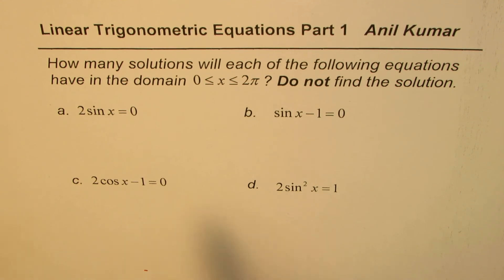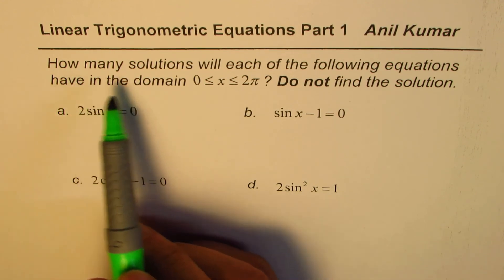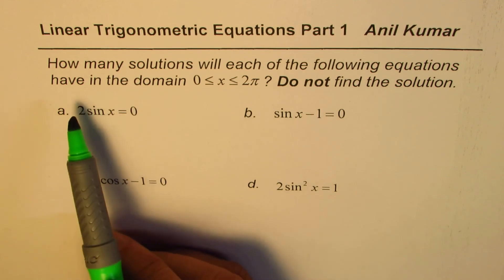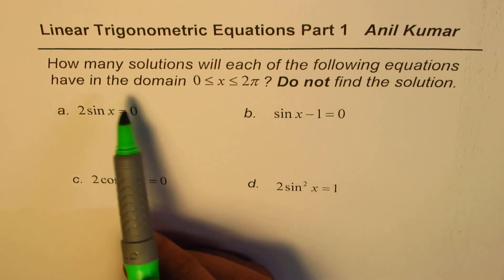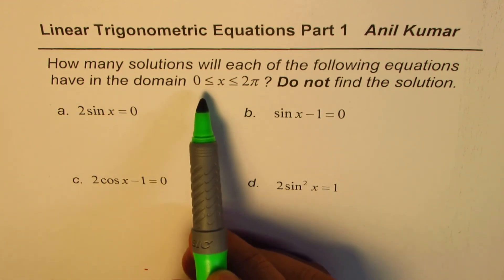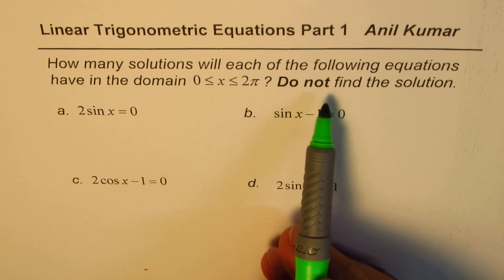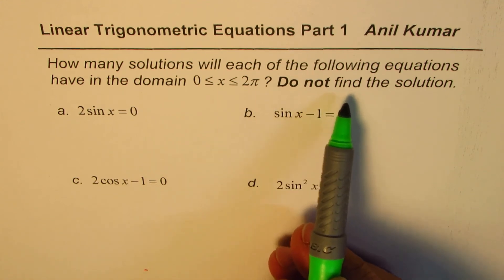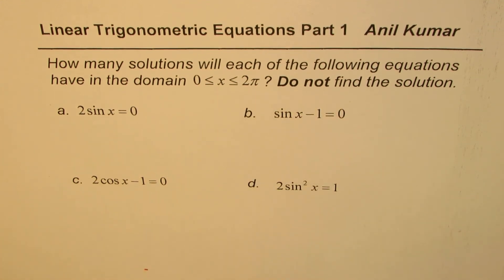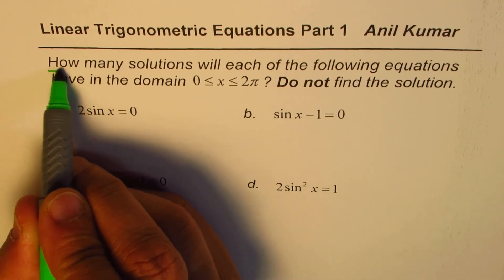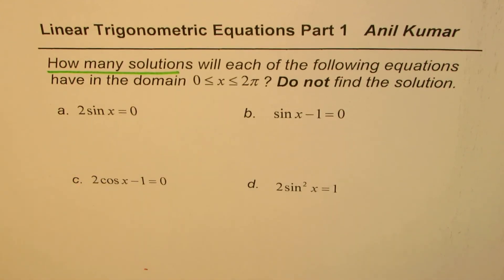The question here is: how many solutions will each of the following equations have in the domain x greater than or equal to 0 and less than or equal to 2π? Do not find the solution — that's important. We'll only understand how many solutions. We have 4 equations here.